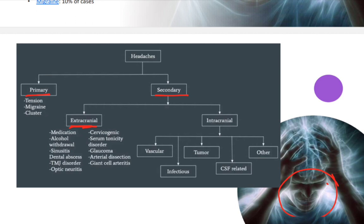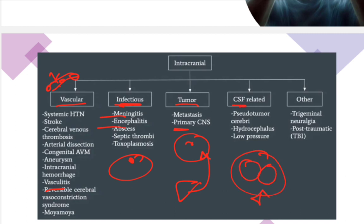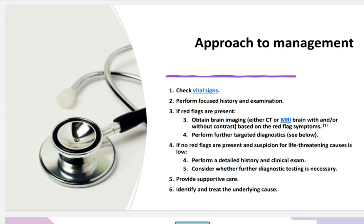For secondary intracranial causes, vascular etiologies include stroke, hemorrhage, aneurysm, or vasculitis. Infections include meningitis, encephalitis, or brain abscess. Tumors may be metastatic — from liver or elsewhere — or primary. CSF-related causes include increased intracranial pressure such as hydrocephalus. Other causes include trauma and trigeminal neuralgia.